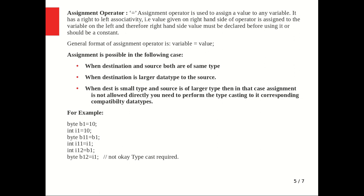For example: byte b1 = 10, int i1 = 10. We can assign b1 to b11 because both are byte type. We can assign i1 to i11 because both are integer type. We can assign b1 to i12 because byte is smaller than integer. However, we cannot directly assign i1 to b12 because i1 is integer and b12 is byte — we must use typecasting here.